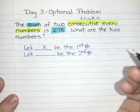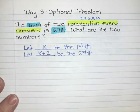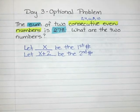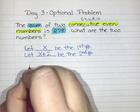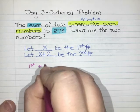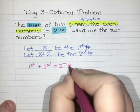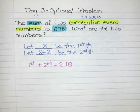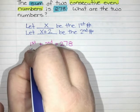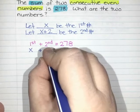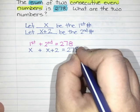So x plus 2. The total that they add to, the sum, is 278. That means if you take the first number and you add the second number, you should get 278. From my let statements I know that the first number is x and the second number is x plus 2, and that should equal 278. So x plus x plus 2 equals 278.